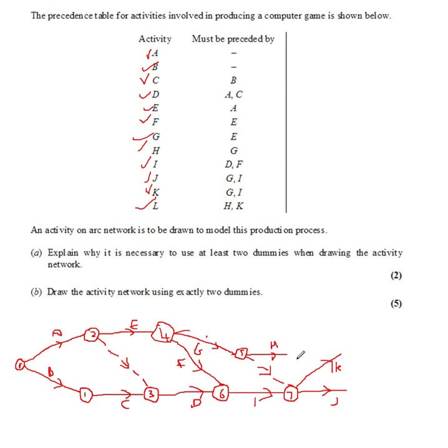And L depends on H and K. This is the reason why I put K going up there, because now L depends on these two finishing. Let's call that node eight. And L is there. And then they both feed into the final finish node, which we could label nine.